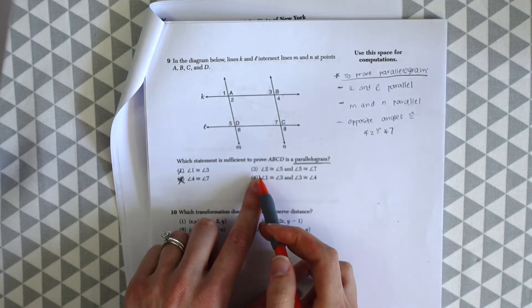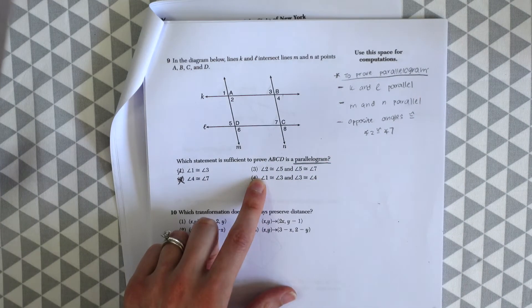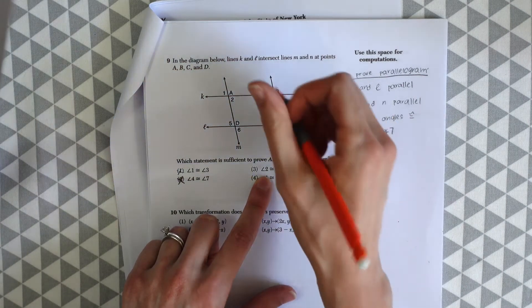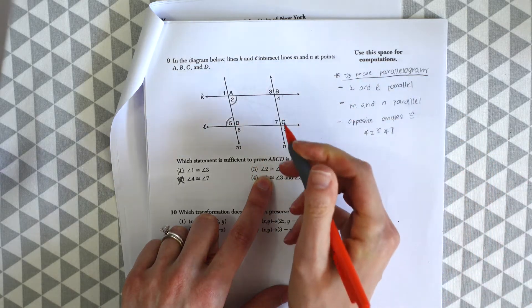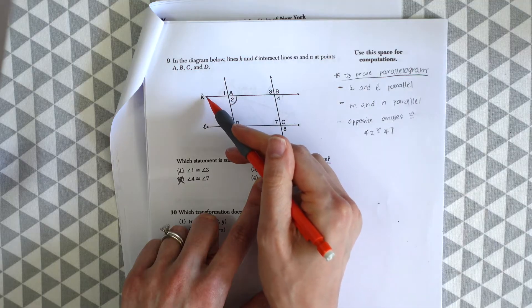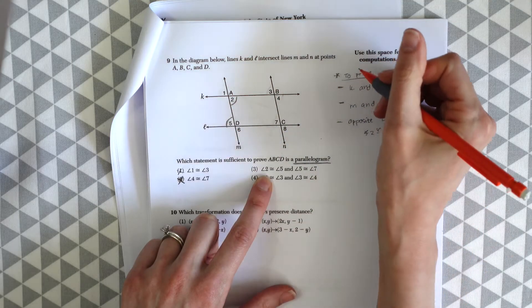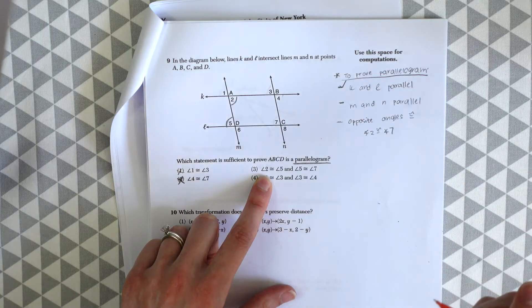Now let's see choice three. This looks like it has more information. Maybe this will help us. Angle two is congruent to angle five. Okay that looks good. That proves that lines K and L are parallel. So that's a check.